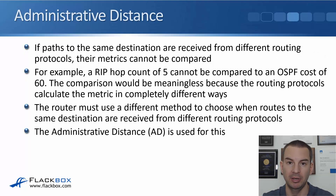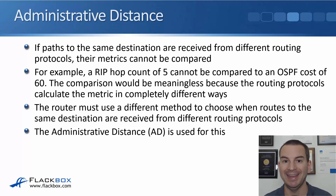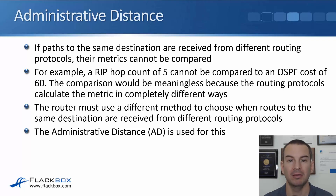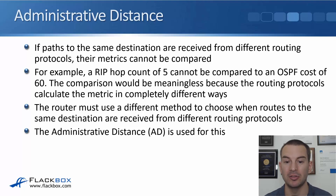If paths to the same destination are received from different routing protocols — if for some reason your organization is running multiple routing protocols and a router receives routes to the same destination from those different protocols — then it can't compare their metrics to each other. For example, a RIP hop count of five can't be compared to an OSPF cost of 60. That comparison would be meaningless because the routing protocols calculate the metric in completely different ways. The router needs to use a different method, and that's what we use the administrative distance for.